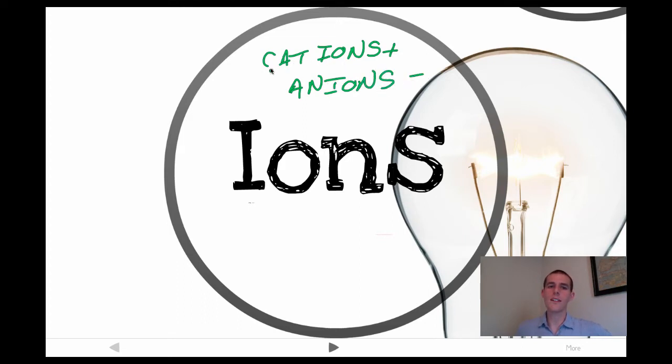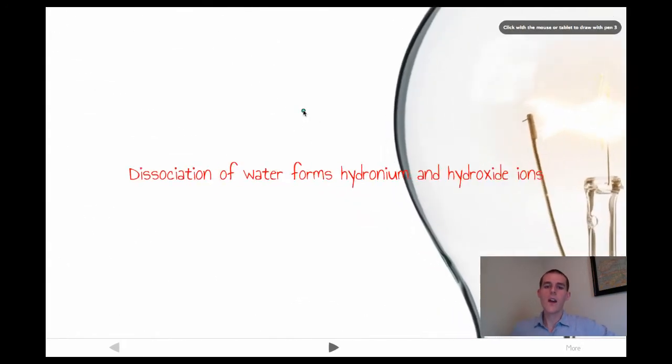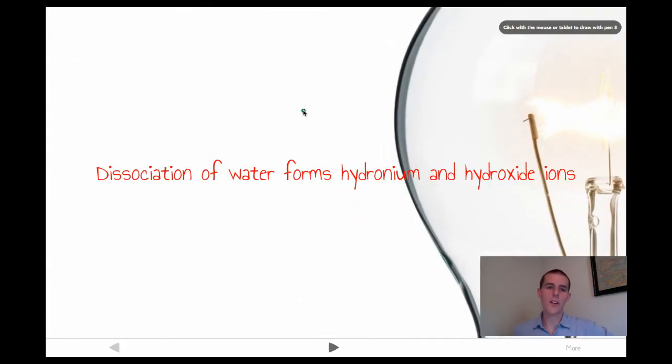The easiest way to remember this is by remembering the term CATP. I always remember cations are positive, so CATP, just something to keep in the back of your head. For today, there are only two types of ions that we are concerned with. We are concerned with the hydronium ion and the hydroxide ion. When water breaks up, it forms one of these two.